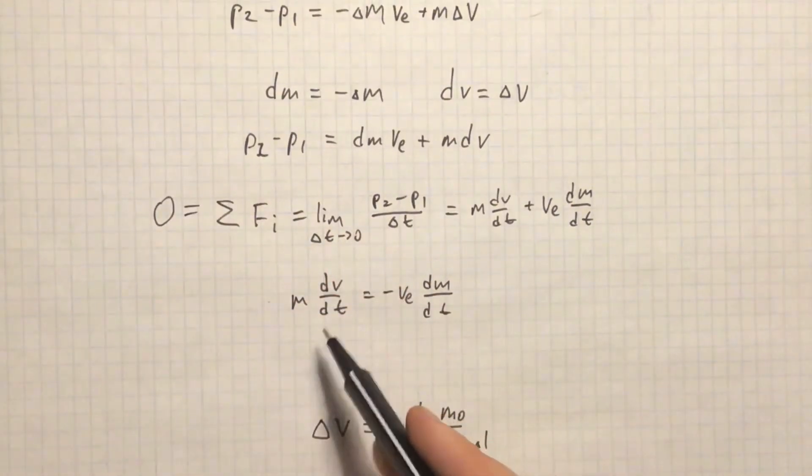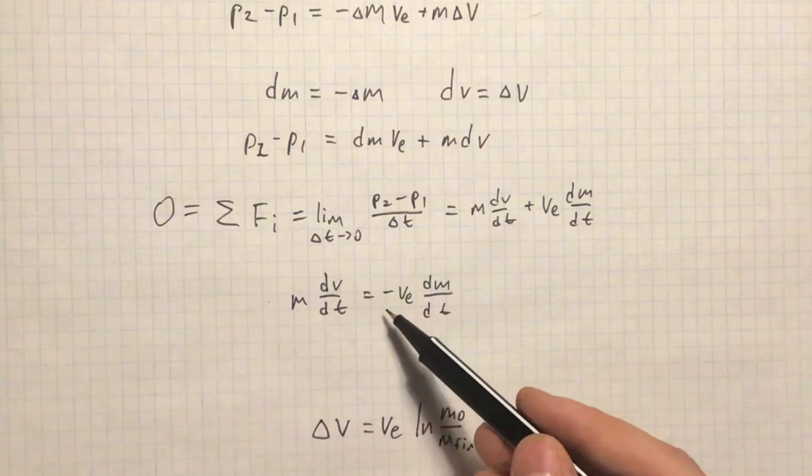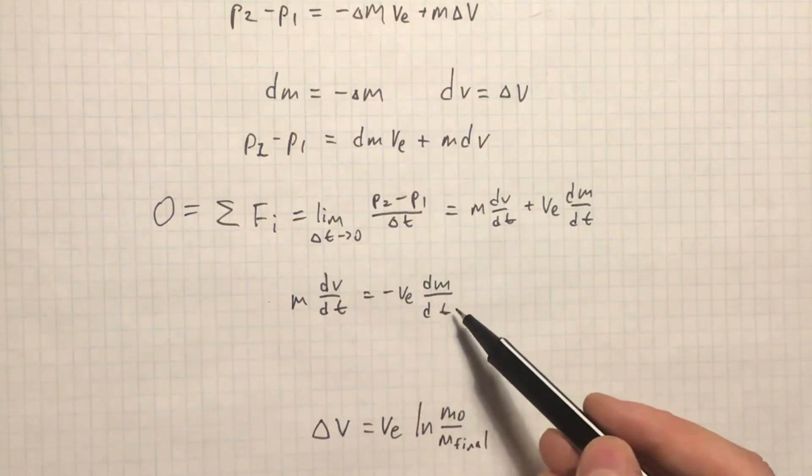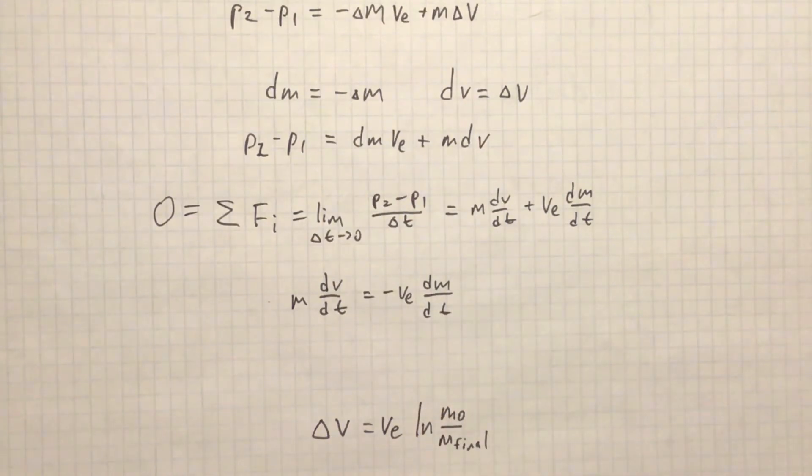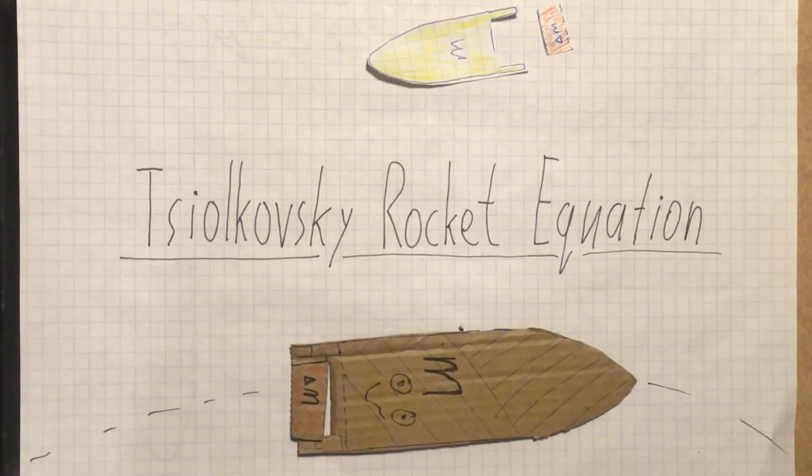Assuming that we get that m multiplied by dv/dt is equal to minus v_e multiplied by dm/dt. And from this we can easily obtain our formula. And this is how we obtain one of the most important equations in rocket science.